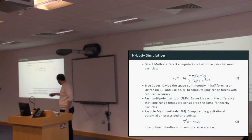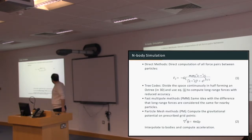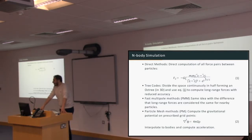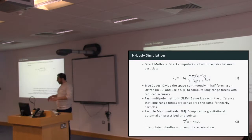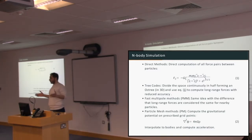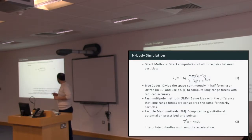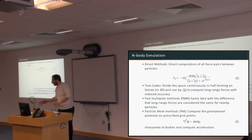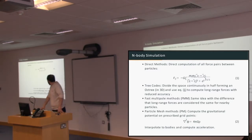The direct methods compute all force pairs between the bodies — so if you have ten million bodies, you compute ten million times ten million force pairs. The tree codes divide the space where the bodies reside continuously, forming octrees and computing far forces less accurately to reduce complexity. The fast multipole methods use the same idea; however, for bodies that are relatively close, they use the same approximation to further reduce complexity.